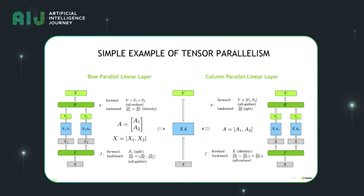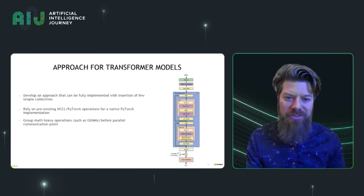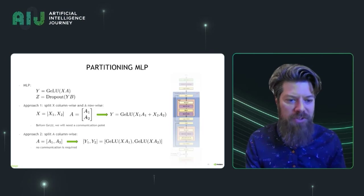So how do we do this kind of splitting? There are basically two ways of splitting a matrix: either by the rows or by the columns. When you do that, you're going to have different communication required between the devices — in some places you need to do an all-reduce and in other places you need to do an all-gather. They're kind of conjugate for the row split and the column split. It turns out that with transformer models, we can use both of these splits and get a really good result. This is what we do in Megatron, building on PyTorch and using the pre-existing NCCL backend for communication. We group all the math-heavy operations together before the communication point so that we can scale as efficiently as possible.